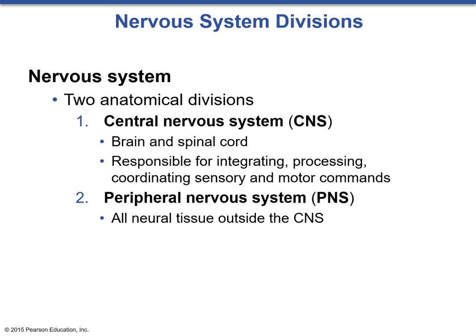The central nervous system consists of the brain, cranial nerves, and spinal cord. The peripheral nervous system is everything that extends off of the central nervous system. It is really more of a relay system, having different sorts of connections that take in sensory information and output motor information.